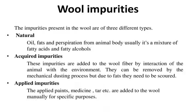Natural impurities are mostly grease and sweat. Grease comes from the sebaceous gland as an oily secretion, and soot comes from the sweat gland. Sometimes dust, other soils, salts, and a large amount of different fatty acids and alcohols are present together. Acquired impurities are picked up by the animal while growing through interaction with the environment — mostly dung, dust, and plant parts like grasses, flowers, buds, and leaves. Together these are sometimes called bars.